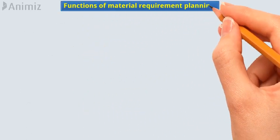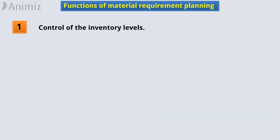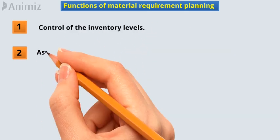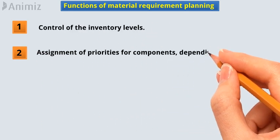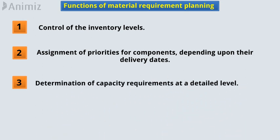Functions of material requirement planning are: 1. Control of the inventory levels. 2. Assignment of priorities for components depending upon their delivery dates. 3. Determination of capacity requirements at a detailed level.